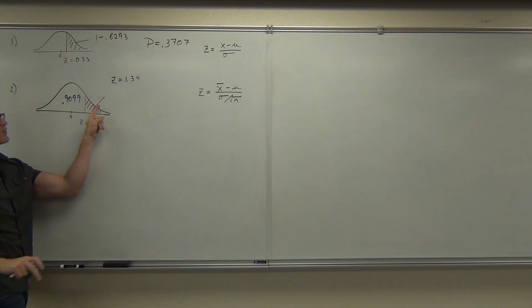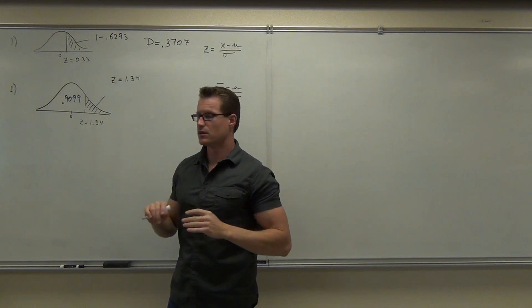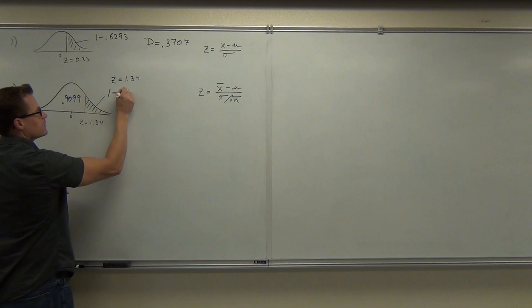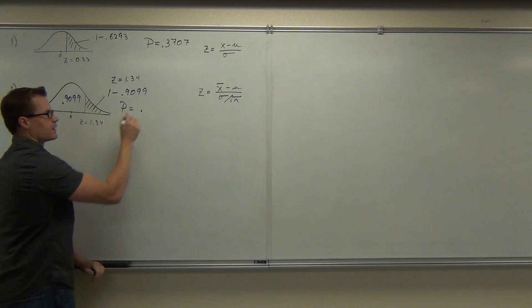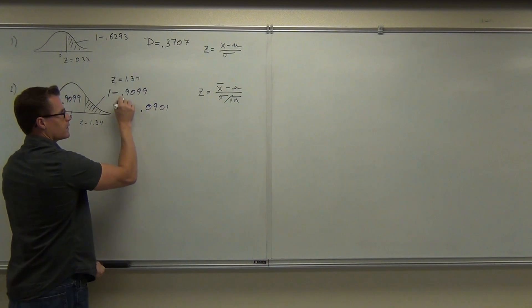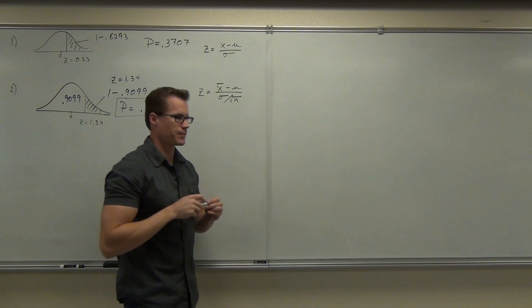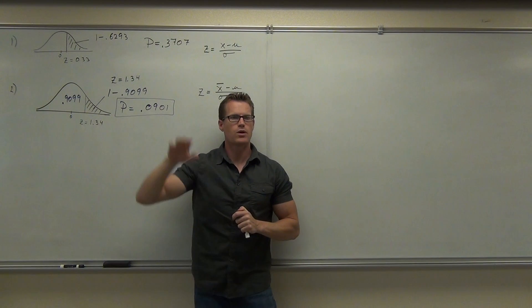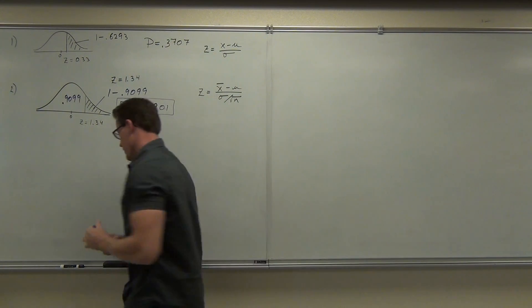So how do I find this area if my table only gives me the area to the left? I subtract it from 1 because I know the whole area is equal to 1. So our area, our probability is 0.0901. If you're okay with the mathematics, now I want you to listen to the interpretation.